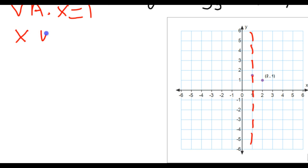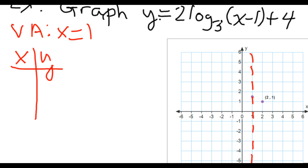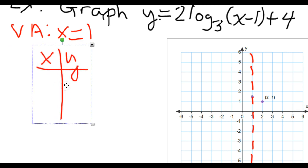Now the next thing we want to do is we want to create our XY table. So here's my XY table. Now, looking back at this equation, I want to pick values for X that make my argument become a 1, become whatever my base is, and whatever my base is squared. So if I look at X minus 1, what would give me a 1 overall for my argument? A 2.